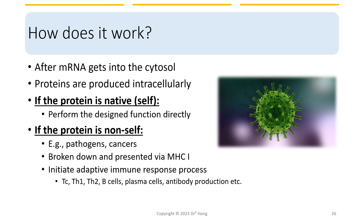After the messenger RNA enters the cytoplasm of the cell and gets translated into proteins, the fate of that protein depends on its origin. If the protein is native and recognized as a self-protein, it can perform its intended function. However, if the translated protein is non-self — such as from pathogens or cancers — it will be broken down into peptide pieces and presented via the MHC class 1 molecule, subsequently initiating adaptive immune responses. If you need a refresh on that concept, please check out lecture 6 of the immunology series.